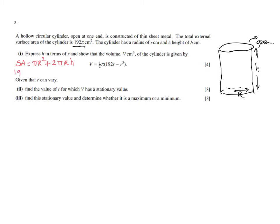They say that's 192π, so 192π = πr² + 2πrh. We have to express h in terms of r, so we need to make h the subject.